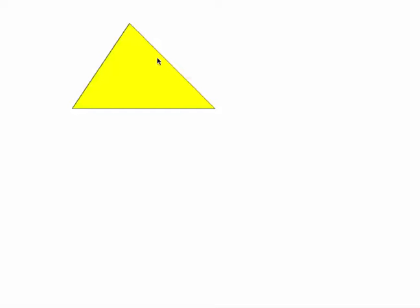This is the law of cosines. We start off with a non-right angle triangle. I'm going to label this angle A, so that's going to be side A. This is going to be angle B, so this is going to be side B. And that's going to be angle C, and this is going to be side C.